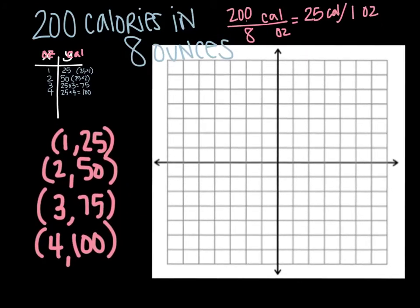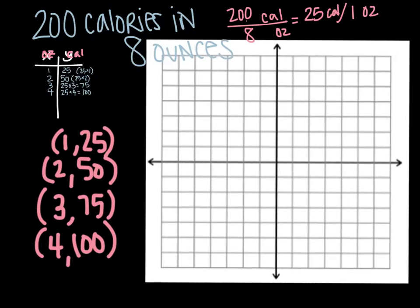You're going to have to pick a scale that works for you. I'm going to count by 1's on my x-axis. And I'm going to count by 10's on my y-axis. Actually, that's not going to work. I'm going to have to count by more than that. I'm going to count by 20's.